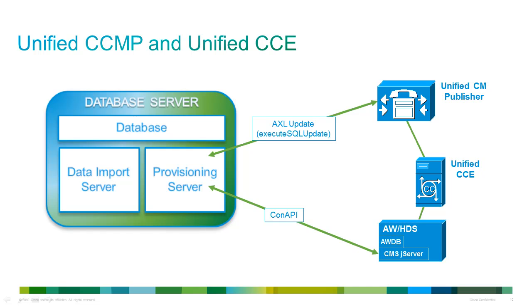As users will access Unified CCMP from the internet or intranet, appropriate firewalls should be installed between the user and the web application server and possibly between the web application and database servers. A front-end firewall requires TCP port 80 and TCP 443 open to allow users to connect to Unified CCMP. A back-end firewall will require TCP port 1433 open to allow the app server to connect to the database. If a firewall is placed between the administration and data server and the data import and provisioning services, TCP ports 2099 and 2098 are required for CONAPI connectivity, and TCP 8443 for provisioning of Unified CM.